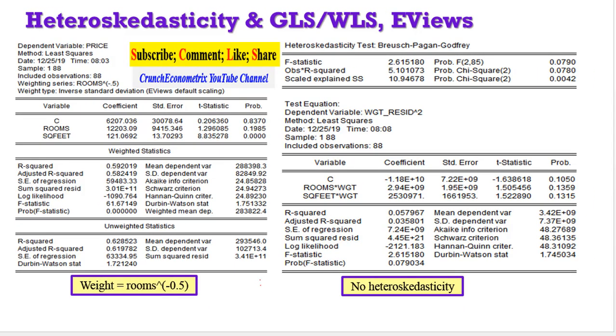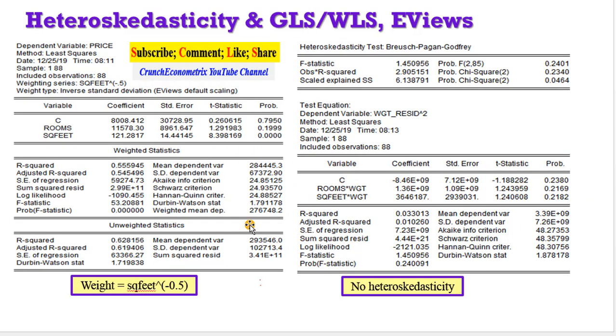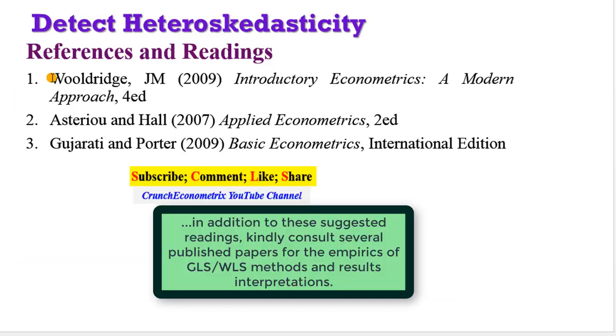So as a recap, this is what we just did. Once we have applied the weights using rooms, we are able to correct for heteroskedasticity. So we can see here, this model is now homoskedastic. Same thing for weights being used in this model corrects for heteroskedasticity. For more information about the GLS or WLS approaches...